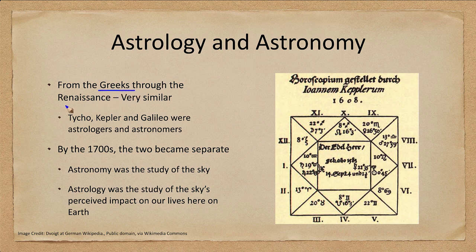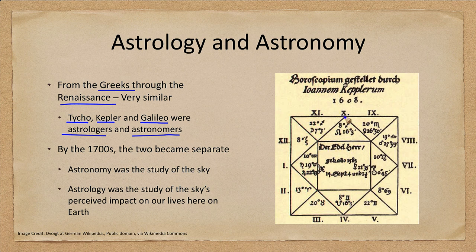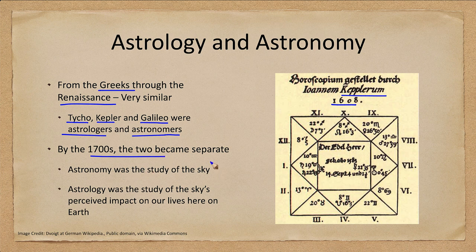For a long time, from the Greeks through the Renaissance, astronomers were also astrologers. Figures we will be discussing in coming lessons — Tycho Brahe, Kepler, and Galileo — were both astrologers and astronomers at the same time. In fact, this is a horoscope cast by Johannes Kepler in 1608, showing the positions of the constellations and where the planets, Sun, and Moon were at the moment of birth. By the 1700s, the two were separating — astronomy became the study of the sky, and astrology became the perceived impact of objects in the sky on our lives here on Earth.